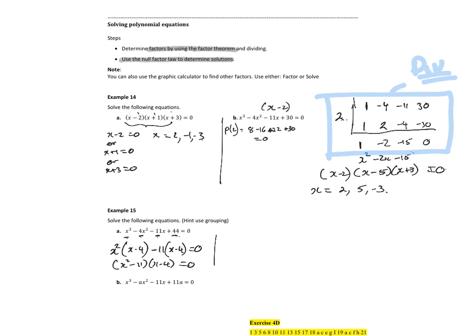So, that implies then that we get x squared minus 11 is equal to 0, or x minus 4 is equal to 0. So x is equal to plus or minus the square root of 11, or x is equal to 4. They're my solutions.